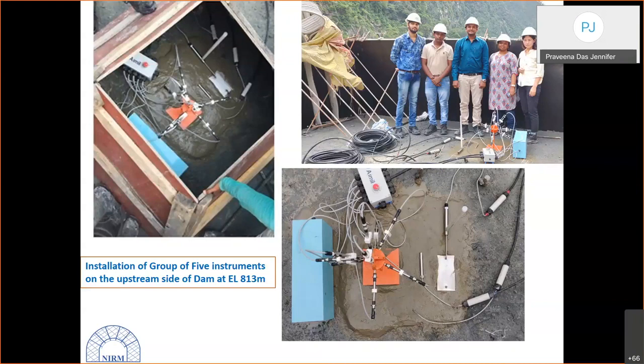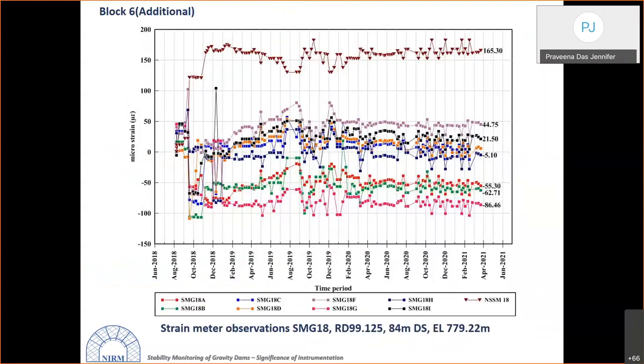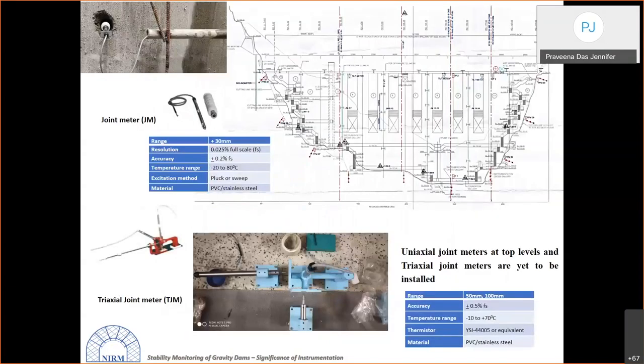Block 6 strain meter readings show that concreting activities on adjacent layers — above or below — are captured on the strain meter readings, demonstrating the sensitivity of the installed instruments during the construction phase.